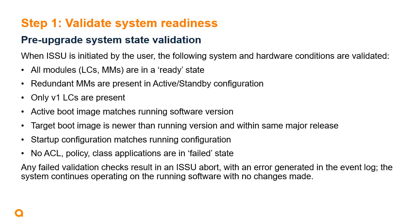On initiation of ISSU by the user, the following system and hardware conditions are validated: all modules — including line cards and management modules — must start in a ready state; redundant management modules must be present in an active and standby configuration; only version 1 line cards must be present; the active boot image must match the current software version running on the switch; the target boot image must be newer than the running version but still within the same major release; the startup configuration must match the running configuration (the user is given an opportunity to save the configuration when they initiate ISSU); and no access lists, policies, or class applications are in a failed state.